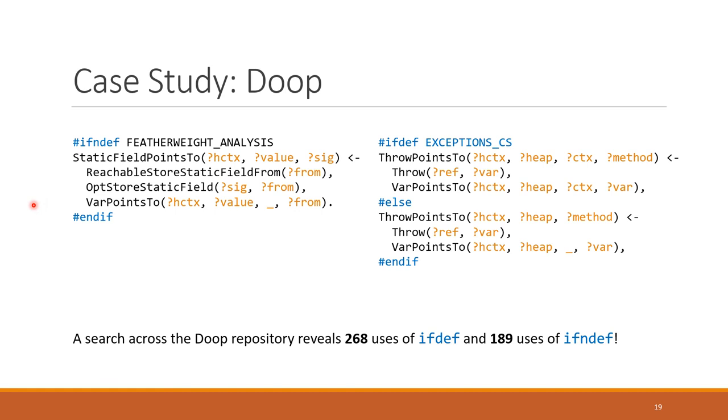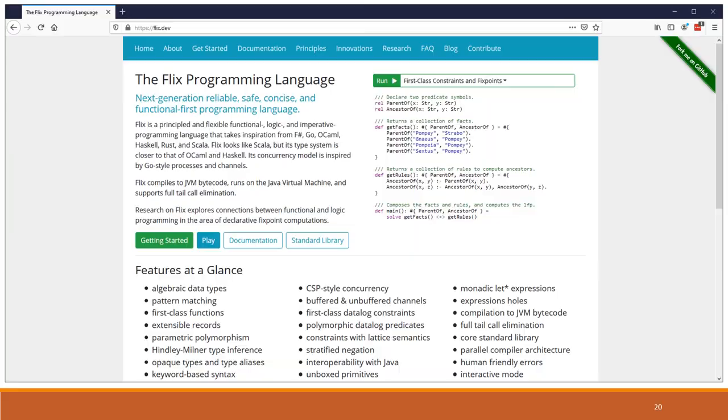For this Doop framework, which is this huge Datalog development, we looked at the source code and we found many examples of selective rule inclusion, where the C preprocessor is used to include or exclude rules. For example, here we can see, well, if this flag is set, then the program has this rule, otherwise it has this rule. So this shows there really is a need for a technique like this.